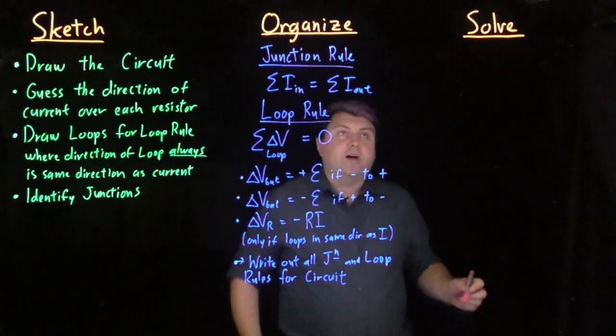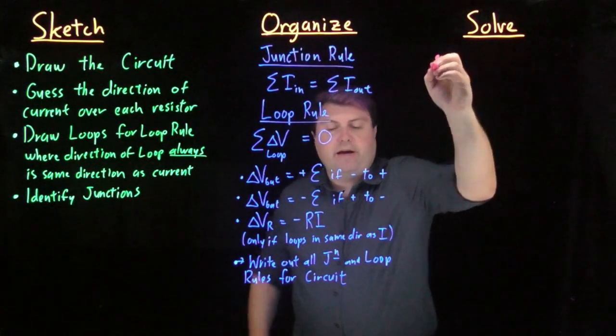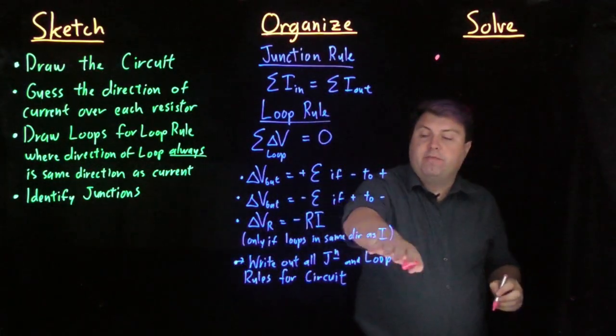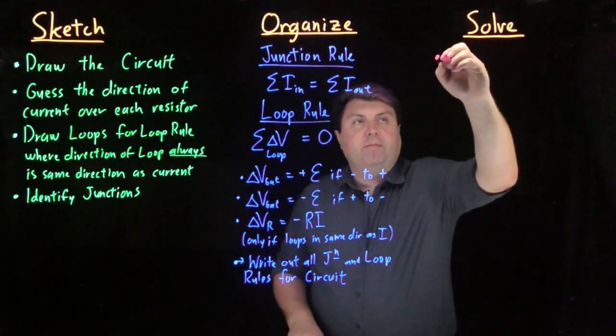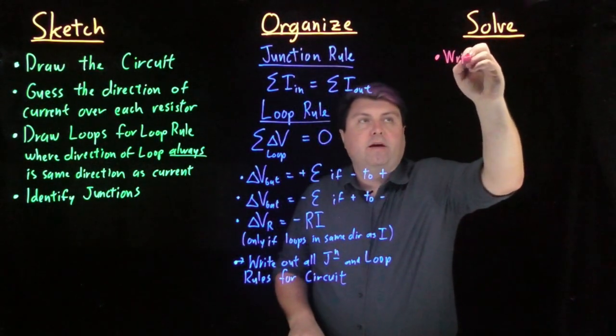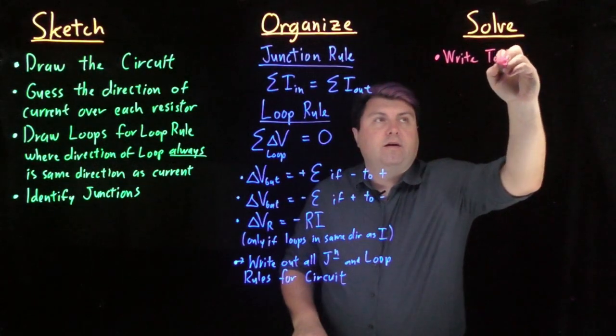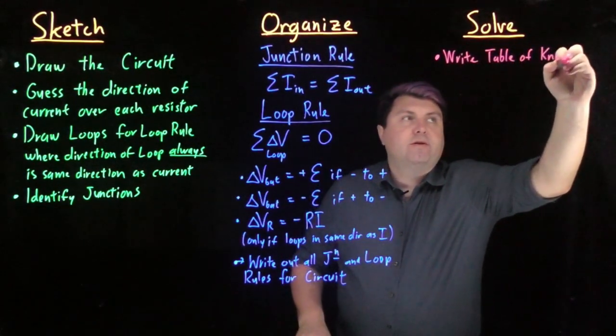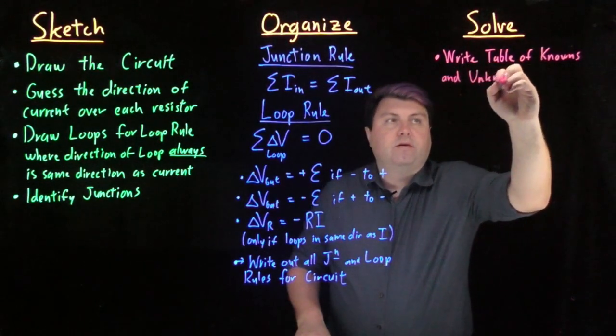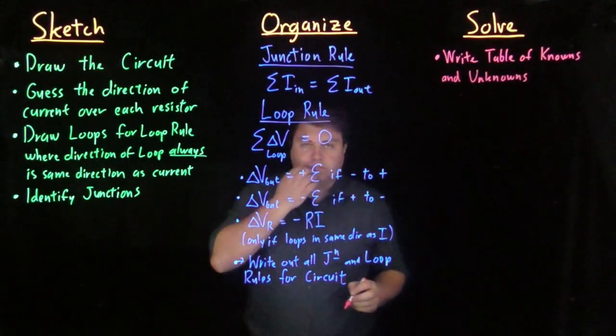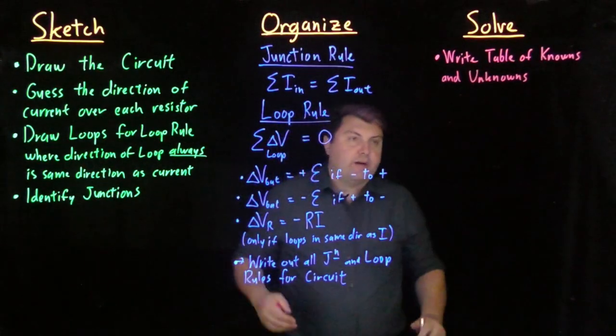So when we are solving this, what this means is now we are going to have some number of loop rules and circuit rules. We want to probably write a table of knowns and unknowns just to help organize ourselves.